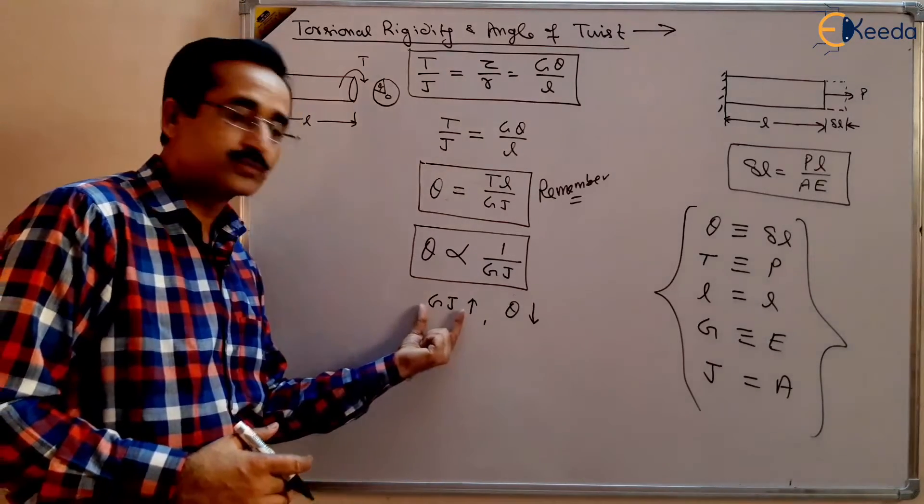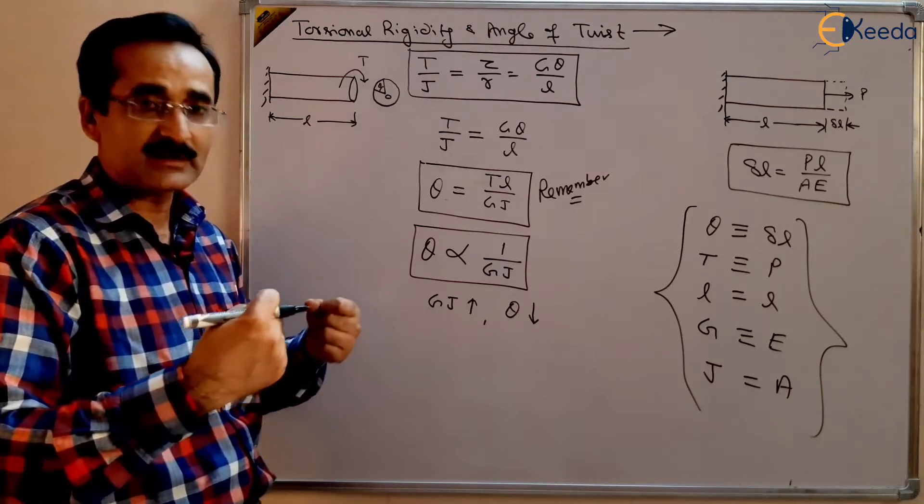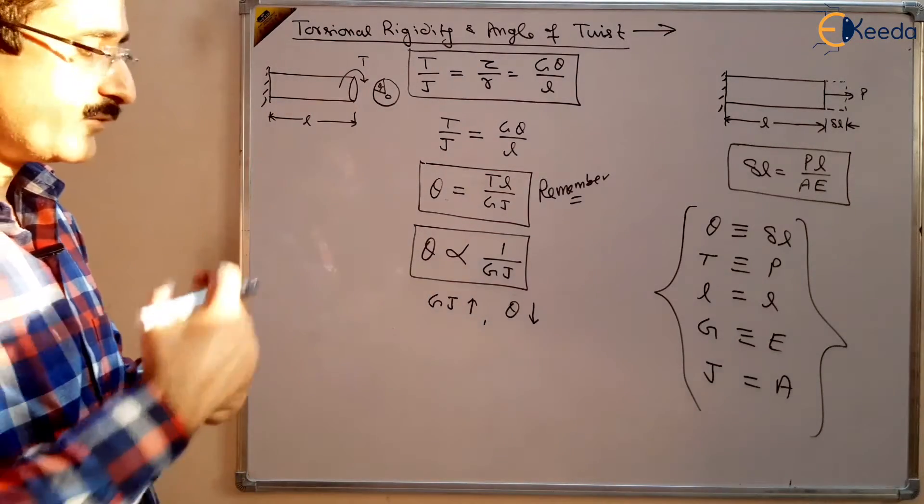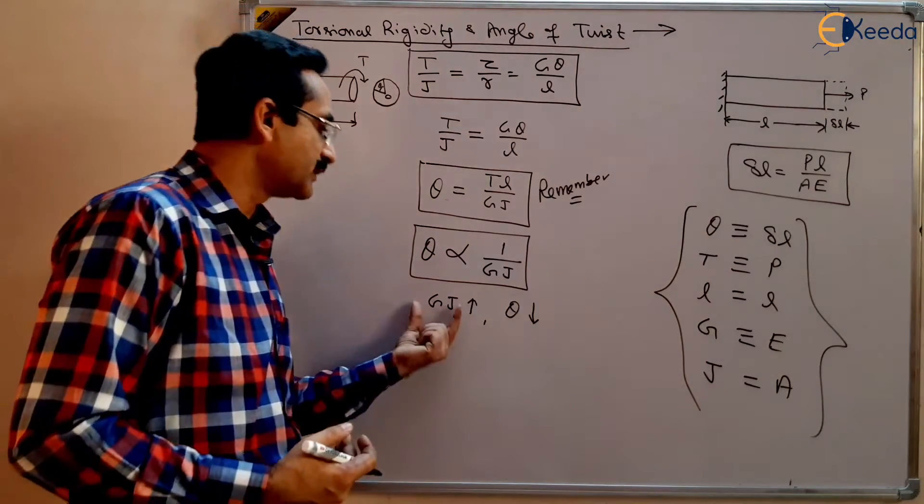This belongs to a strong member. If GJ is higher, it means it is a rigid shaft. We are approaching towards the higher rigidity. So that is called torsional rigidity.